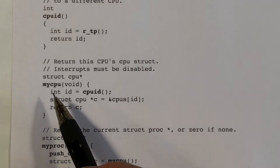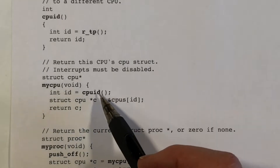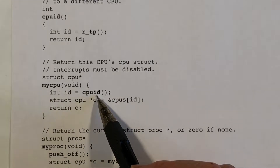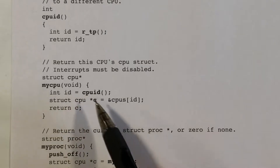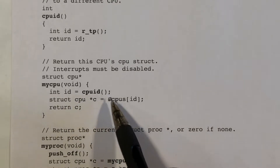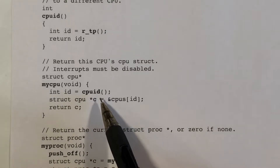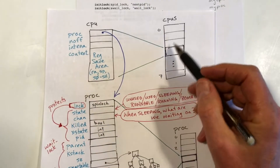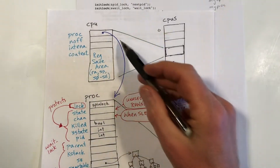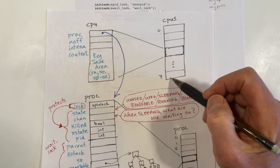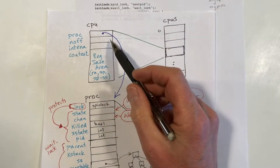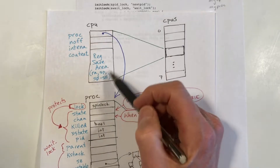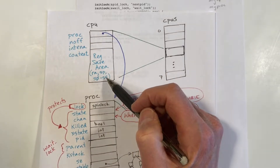The MyCPU function will get the identifier — the number for the current core — and then it will look up the CPU structure in the array. Remember, there's one CPU struct for each of the eight cores. All we're doing here is returning a pointer to the structure that describes the data for this particular core.